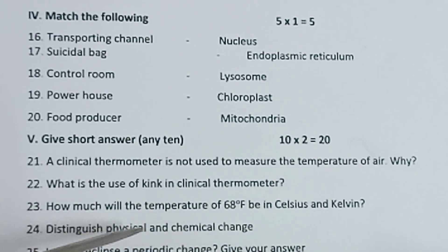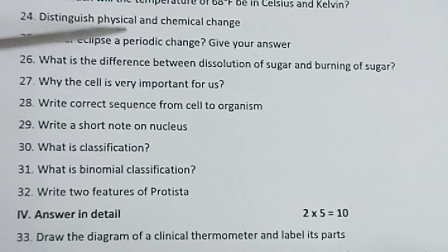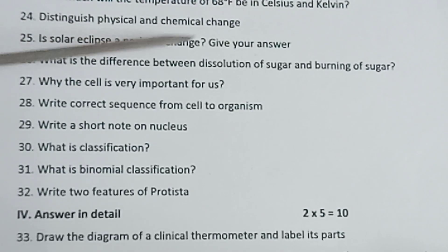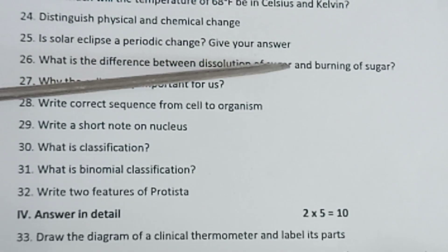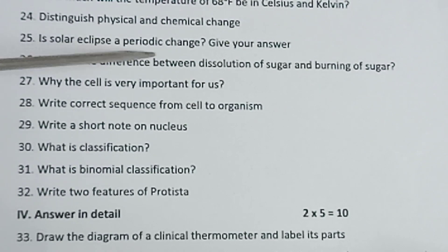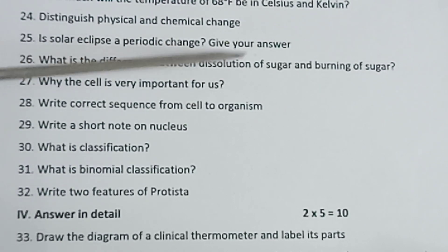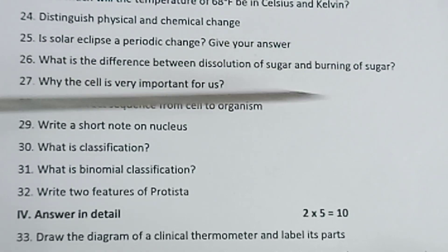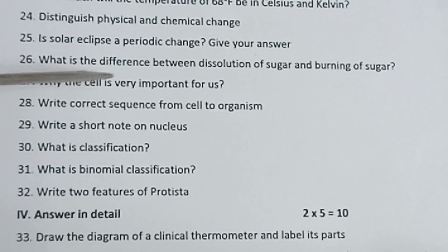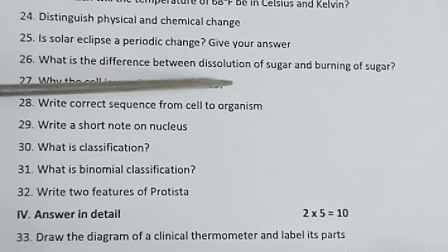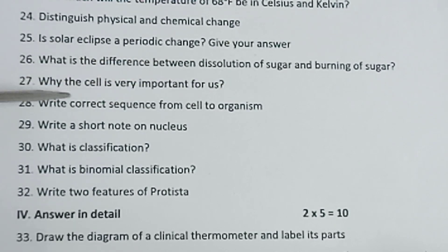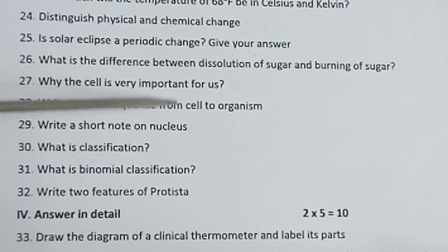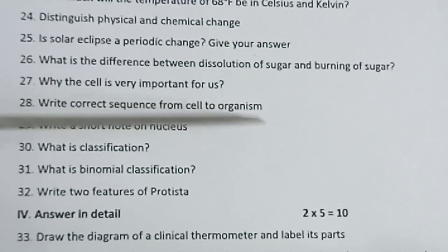Twenty-fourth one: Distinguish physical and chemical change. Twenty-fifth one: It's a periodic change — give your answer. Twenty-sixth one: What is the difference between dissolution of sugar and burning of sugar? Twenty-seventh one: Why is the cell very important for us? Twenty-eighth one: Write the correct sequence from cell to organism.